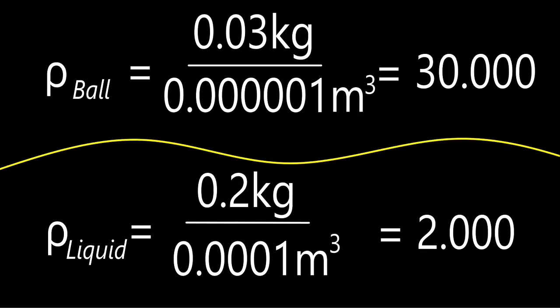We'll do the same with the liquid. In our case, the liquid has a mass of 0.2 kilograms and we'll divide it by its volume of 0.0001 cubic meters, which takes us to the density of 2,000 kilograms per cubic meter. For reference, water has 1,000 kilograms per cubic meter.